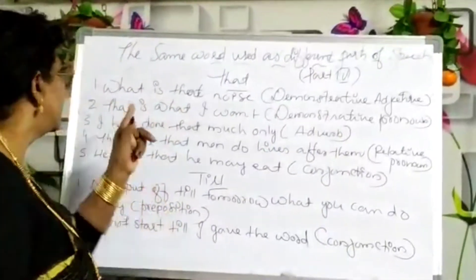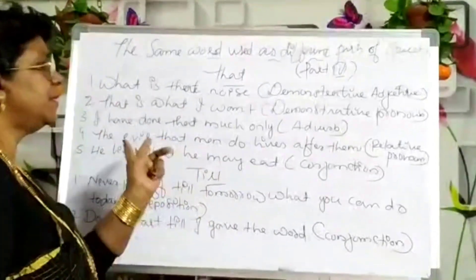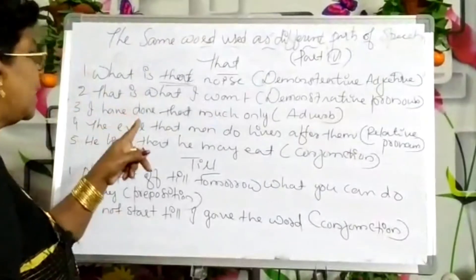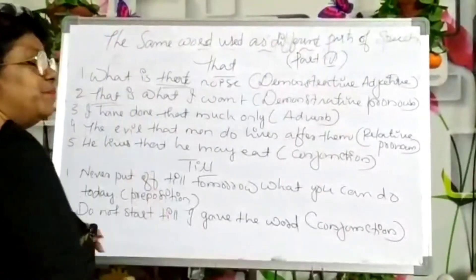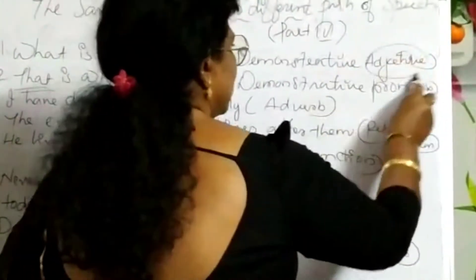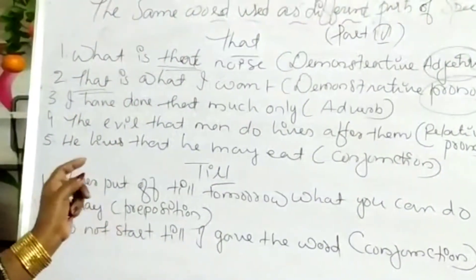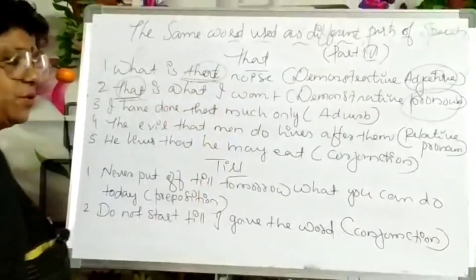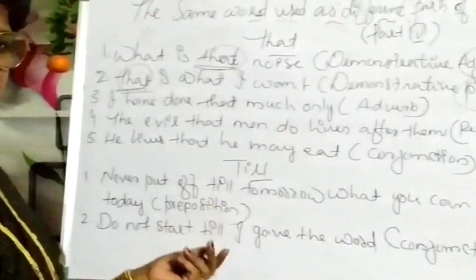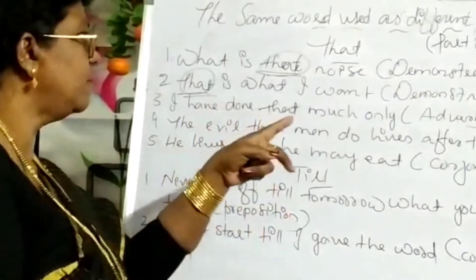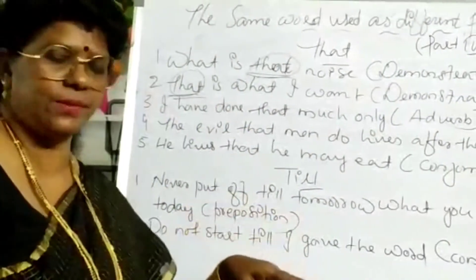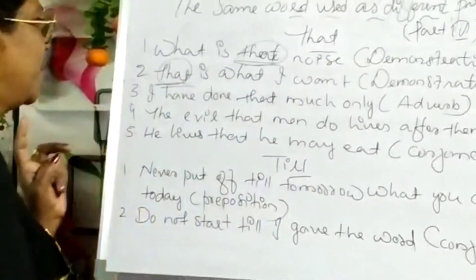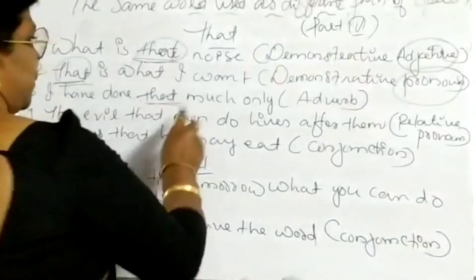Next word: 'that.' In 'What is that noise?' 'that' is a demonstrative adjective. In 'That is what I want,' 'that' is a demonstrative pronoun. Words like those, that, and such come under demonstrative adjectives, and those same words can also be used as demonstrative pronouns. In 'I have done that much only,' 'that' functions as an adverb.